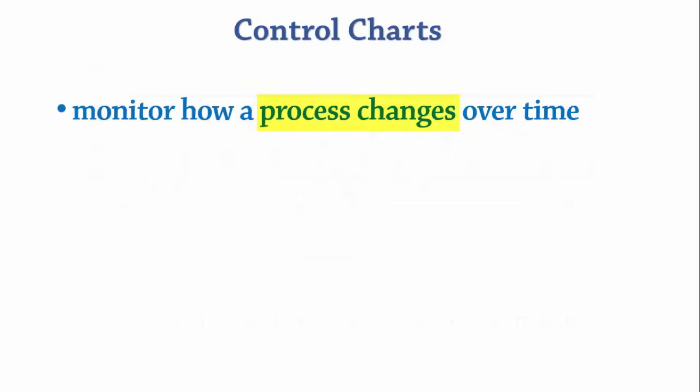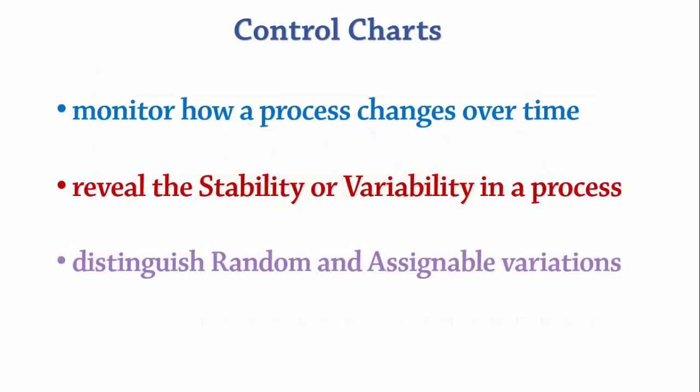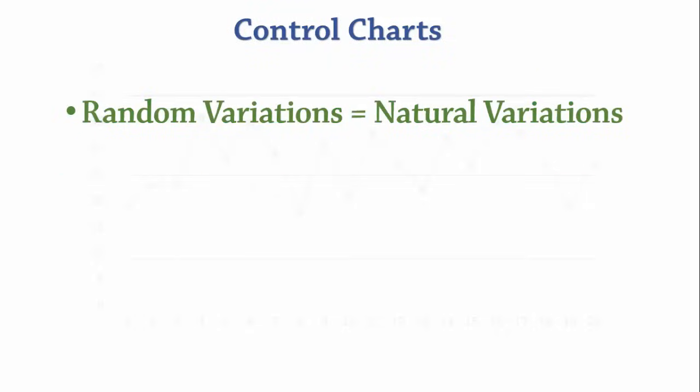Control charts are used to monitor how a process changes over time. They reveal the stability of variability in a process. They help us to distinguish between random and assignable variations. Random variations, also called natural variations, are present in every system.